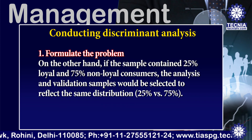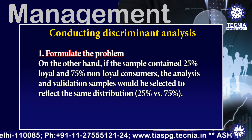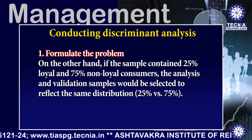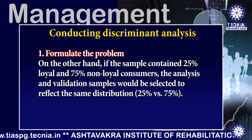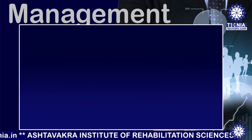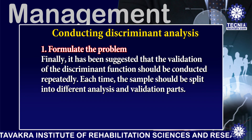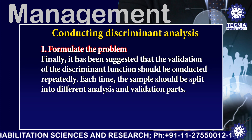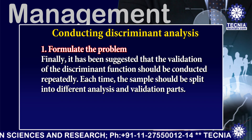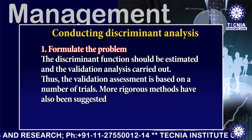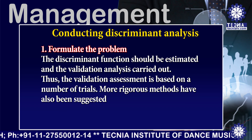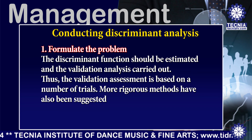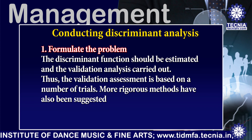On the other hand, if the sample contained 25 percent loyal and 75 percent non-loyal consumers, the analysis and validation samples would be selected to reflect the same distribution. Finally, it has been suggested that validation of the discriminant function should be conducted repeatedly. Each time, the sample should be split into different analysis and validation parts, the discriminant function estimated, and the validation analysis carried out. Thus, the validation assessment is based on a number of trials, and more rigorous methods have also been suggested.